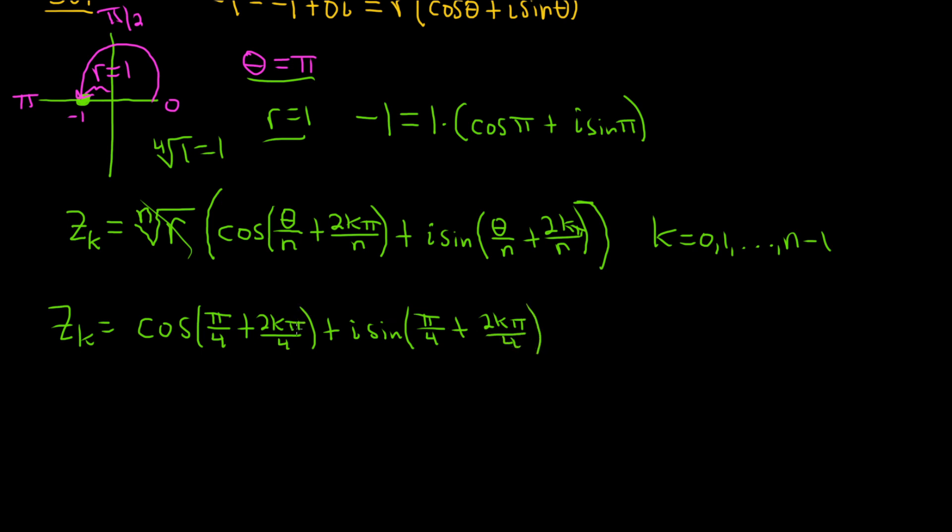Let's start with 0. So z sub 0 is our first root. Well, that would just mean that k is 0, so you just get cosine of pi over 4 plus i sine of pi over 4.